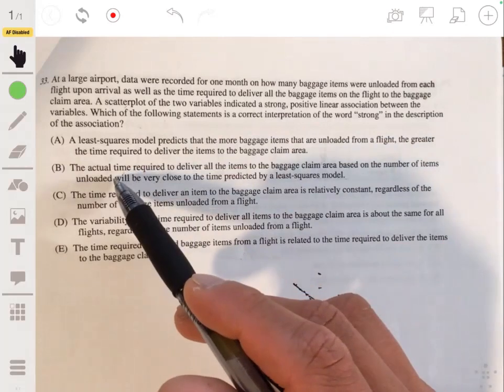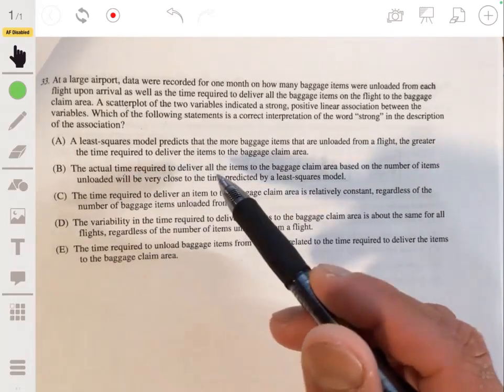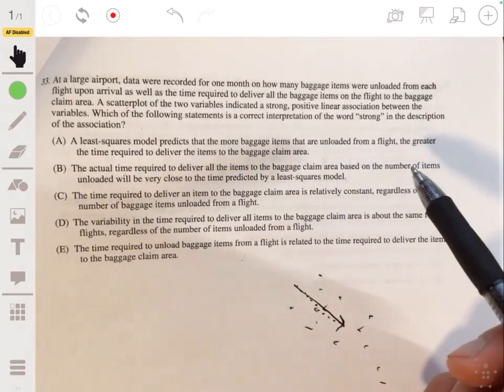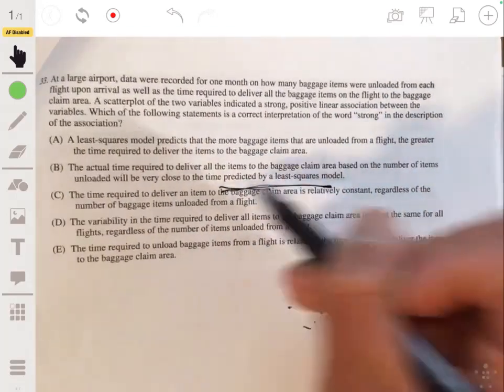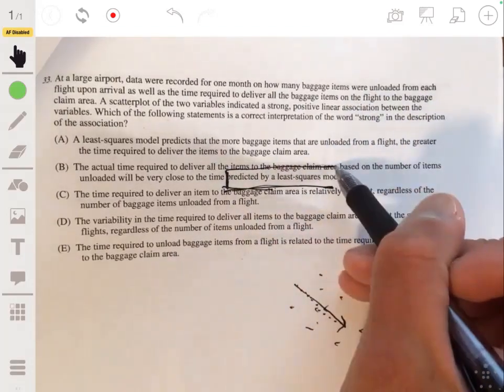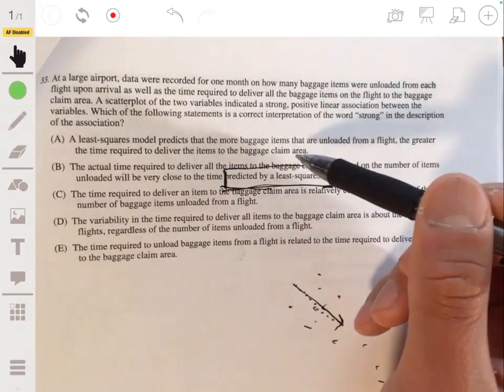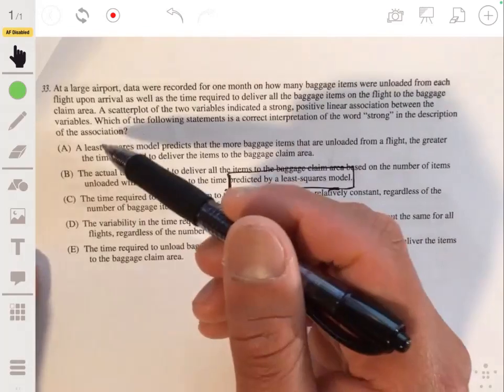So it would be, let's see, if you read B, the actual time required to deliver all the items to the baggage claim area based on number of items unloaded will be very close to the time predicted by the least squares regression model. Yeah, so it does a good job predicting. So then B would be our answer.